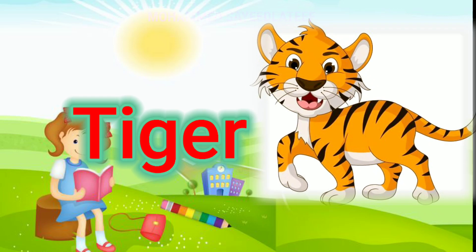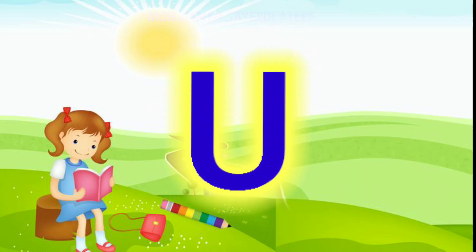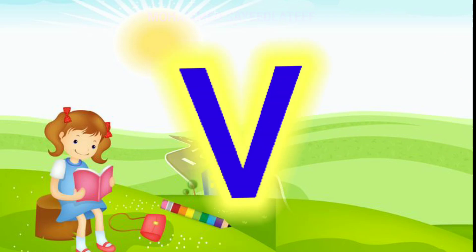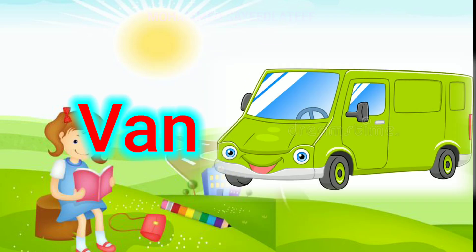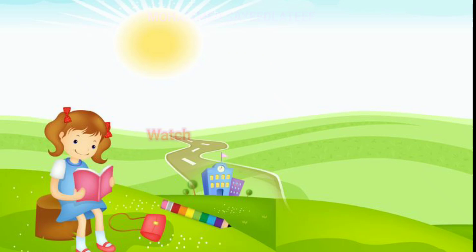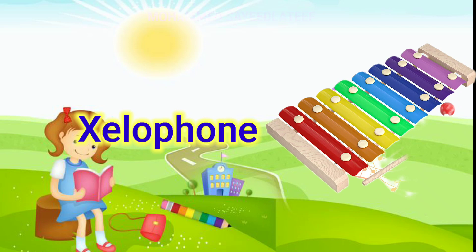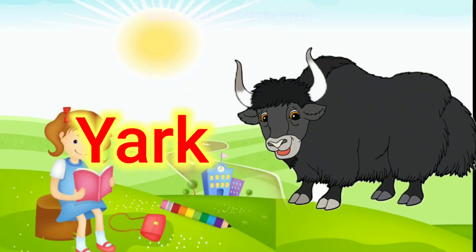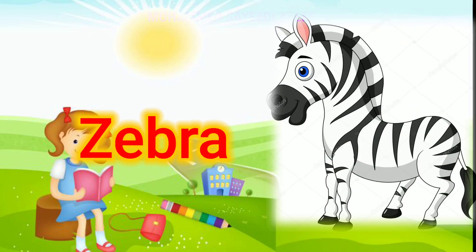T for tiger, U for umbrella, V for van, W for watch, X for xylophone, Y for R, Z for zebra.